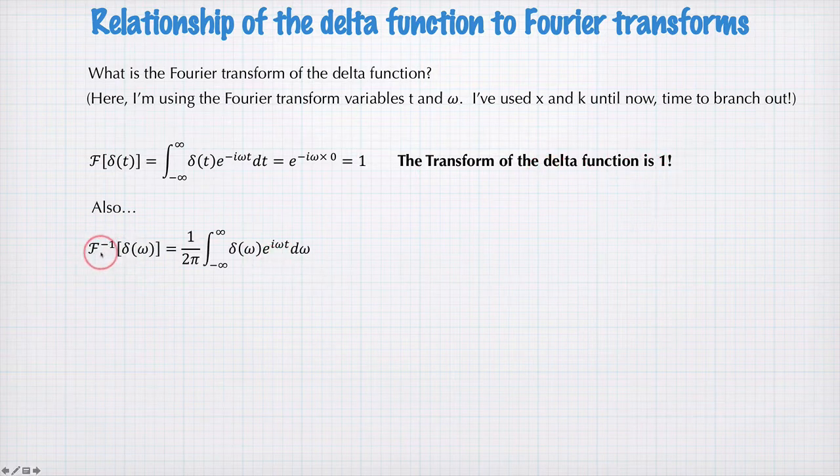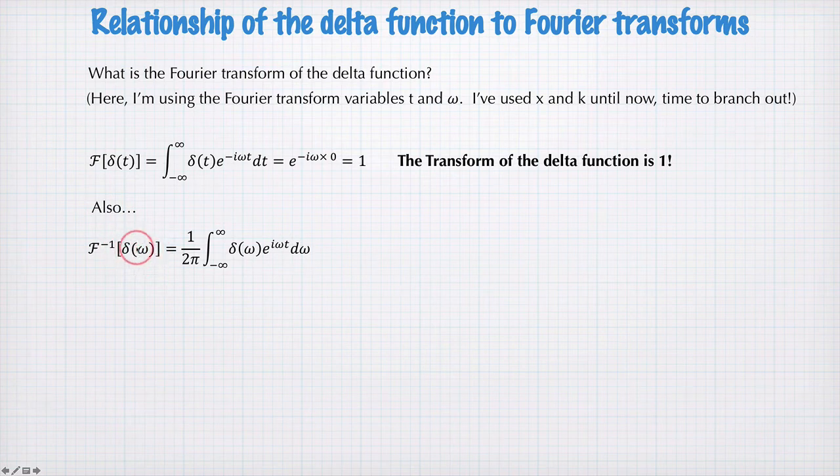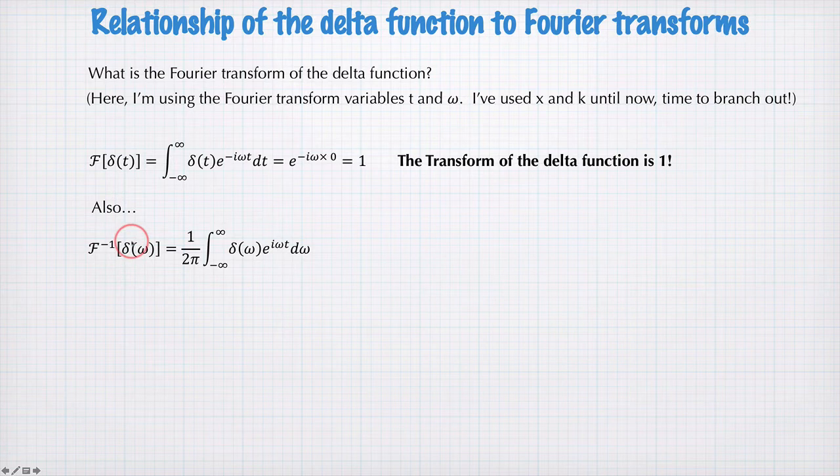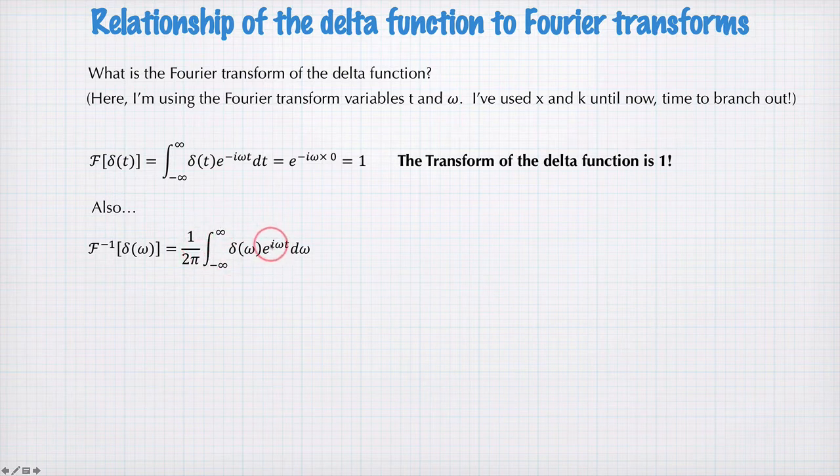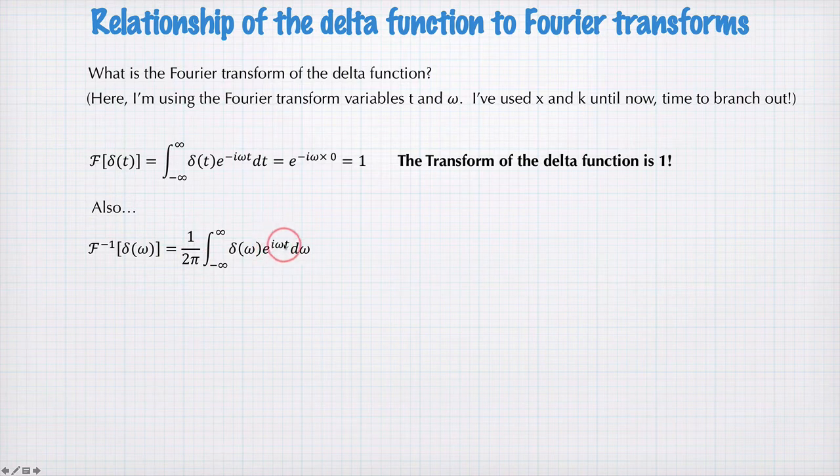Now also, the inverse Fourier transform of delta omega, so this is the delta function in frequency space now. The inverse Fourier transform of this can be defined like this. This is the equation for the inverse Fourier transform. We've got a factor of one on two pi at the front and the plus i omega t here.